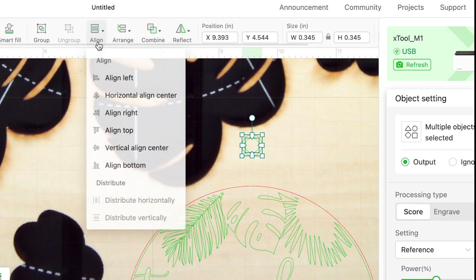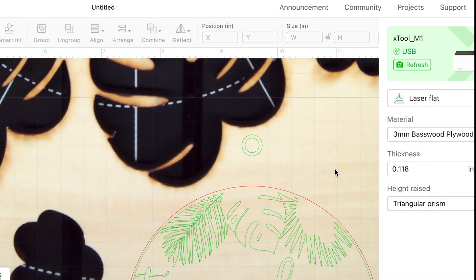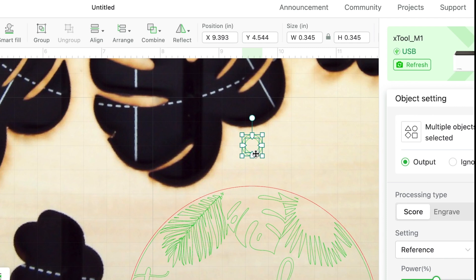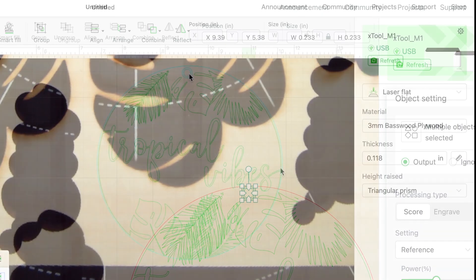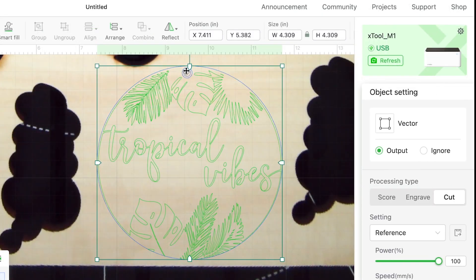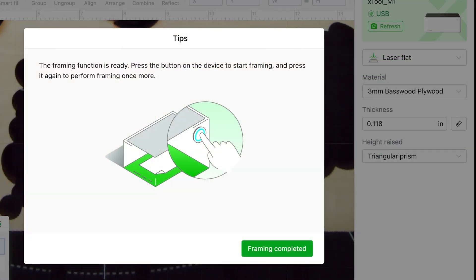Spoiler alert, you don't. But you can select them, align them, and group them just to indicate that those both need to be cut. You see how they say score over in the right? We're going to change that to cut after we size it and then our entire piece is ready for framing.